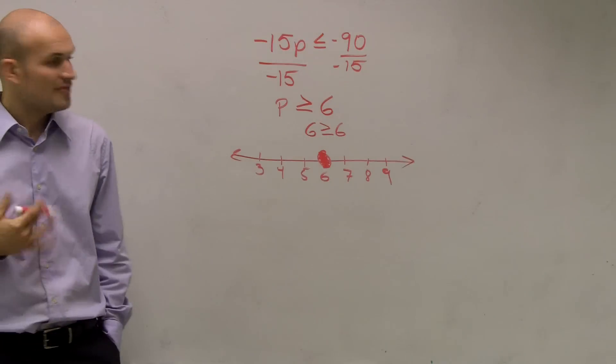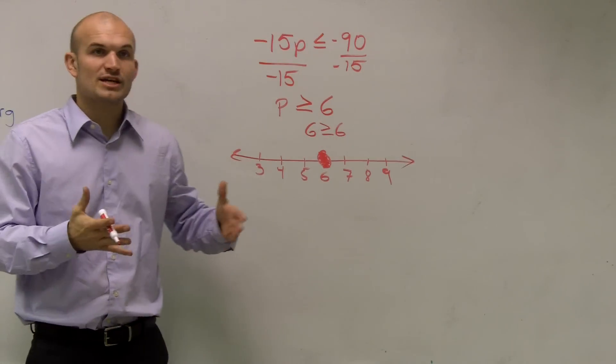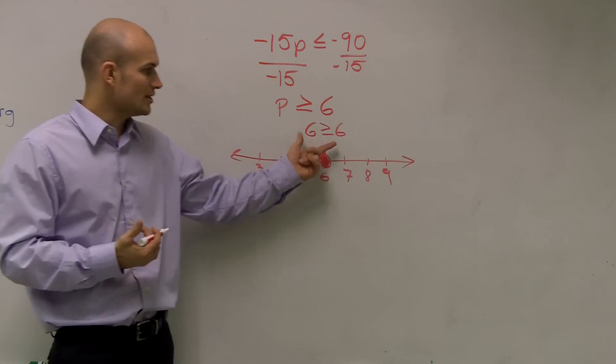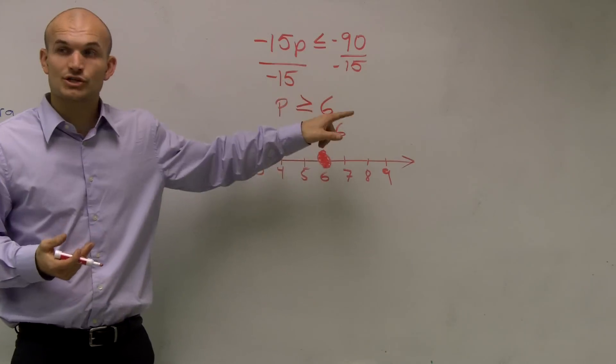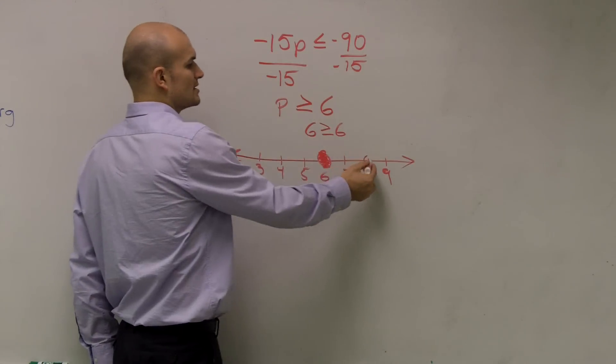So you're going to shade it in. Then I need to determine, where do I shade? Do I shade to the left or to the right? And I look at this and it says all numbers that are greater than 6 make the inequality true.